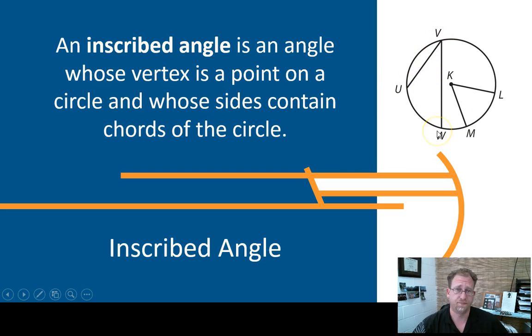Circle UBW is an inscribed angle because it does not have radii as its sides, it has chords as its sides, and its vertex is not the center of the circle, its vertex is a point on the circle.